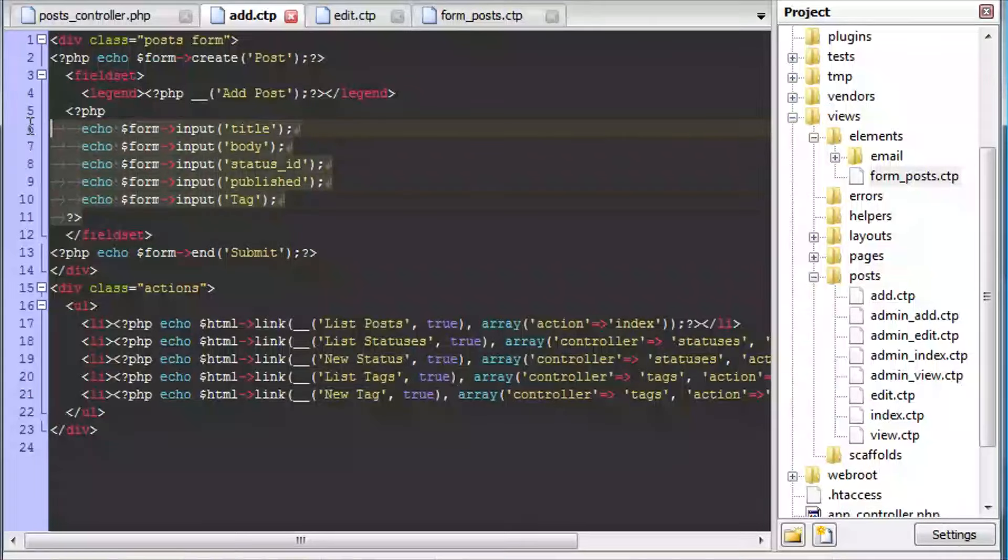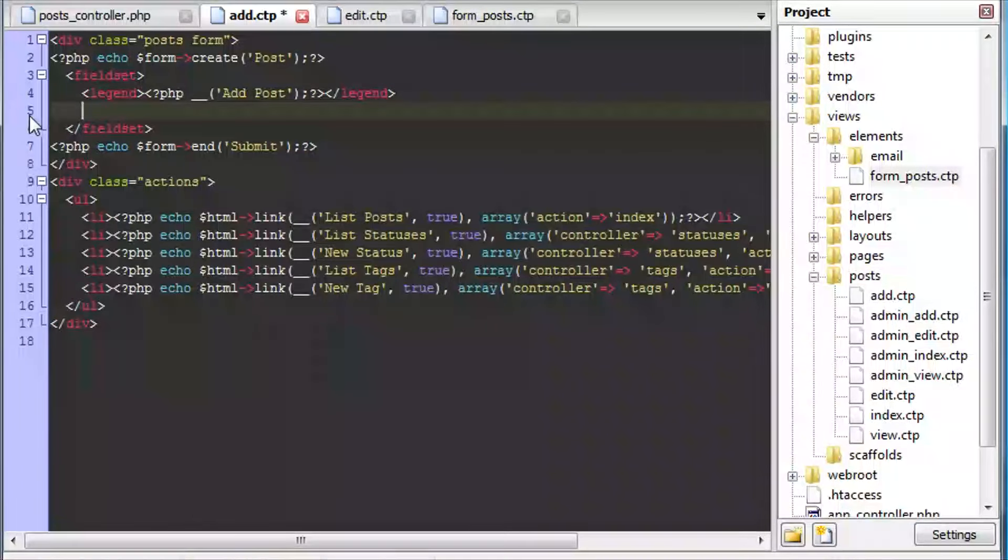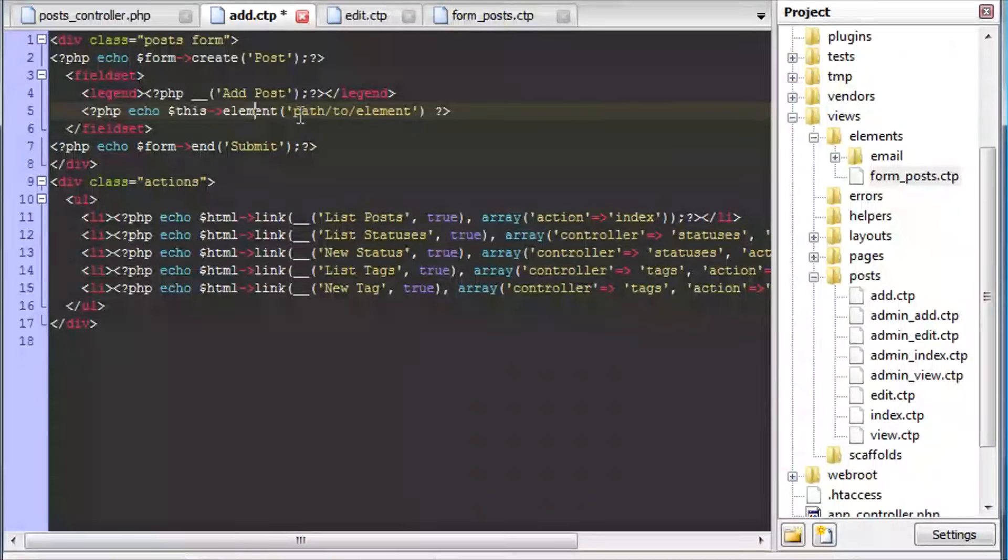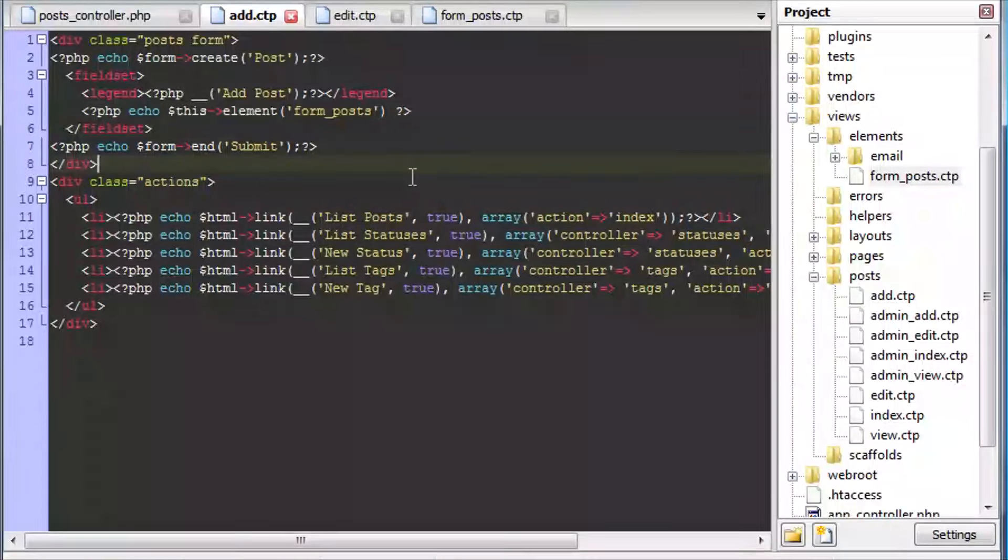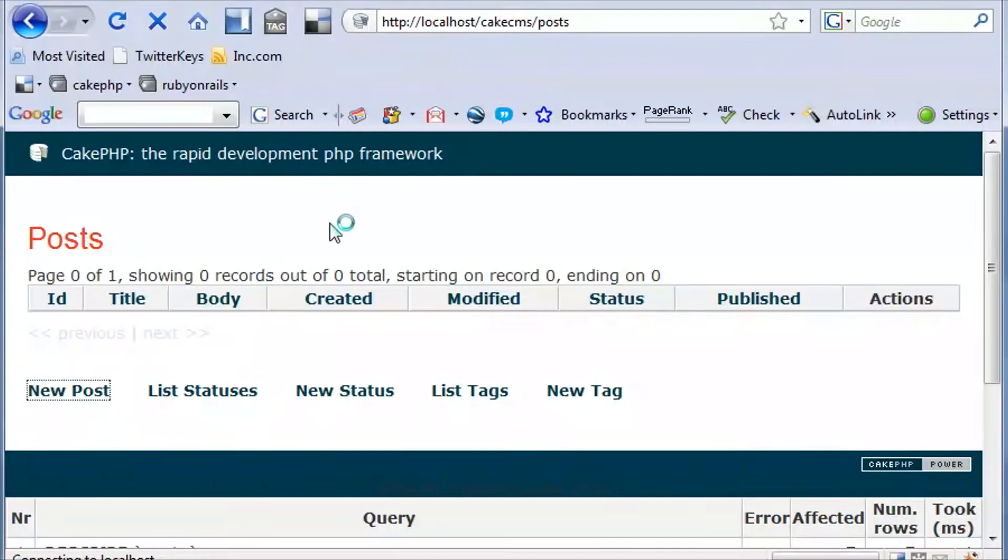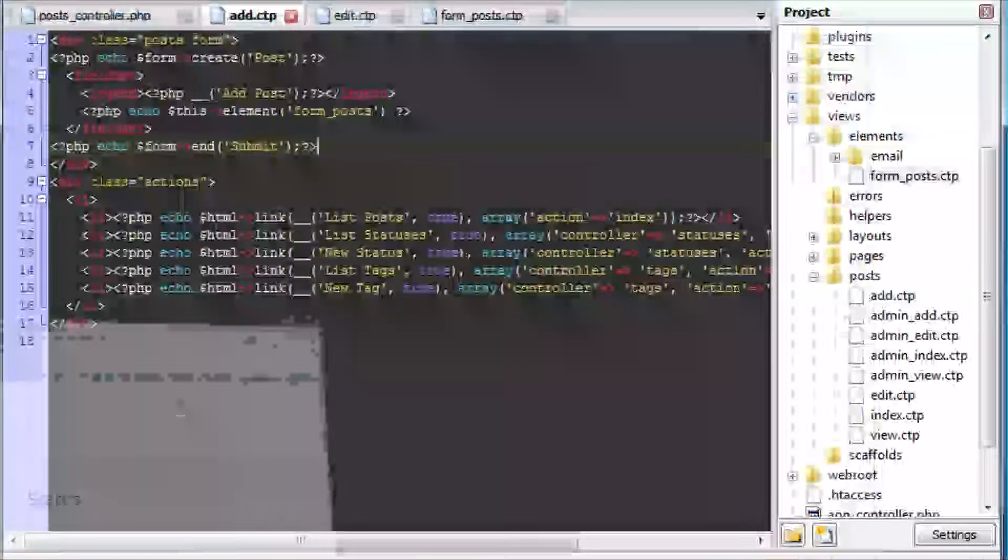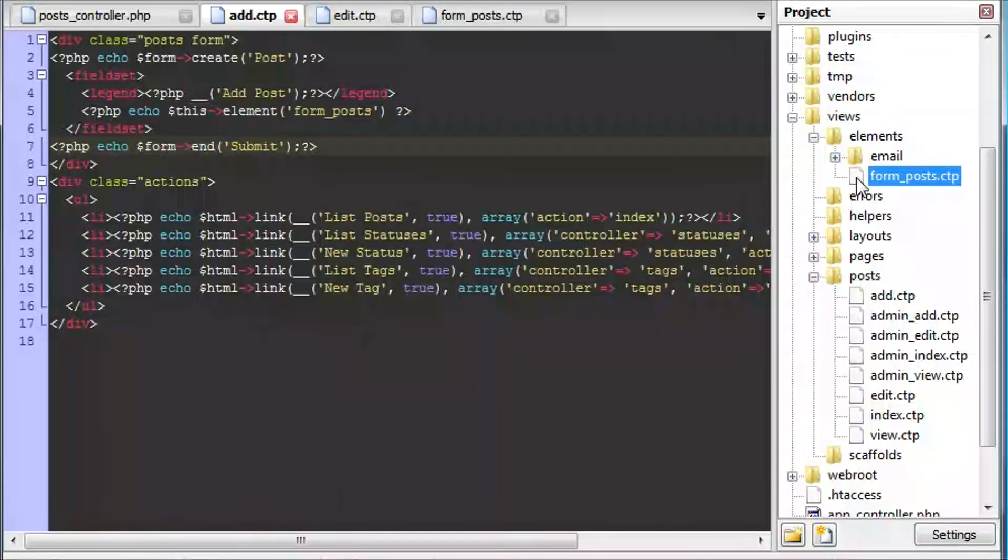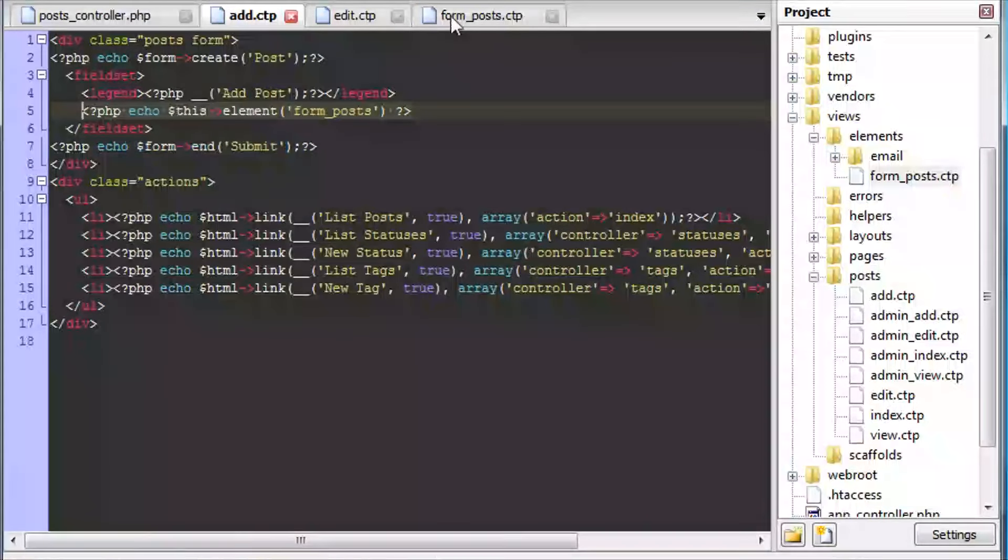We'll go back into our add. We'll remove it from there. We'll then include it. So we'll do a this element method. And we'll just throw in the location of where it is. So form_posts. And now if we come back into our project here and we click on new post. You can see that it's still there. We're still using that. But now we're using it from inside here. So now let's just make a copy of that method we just did. Including it. Copy.